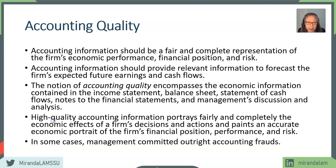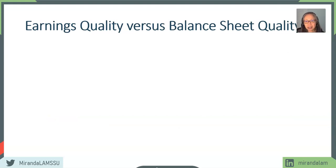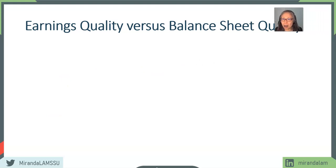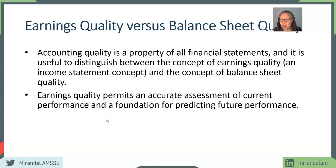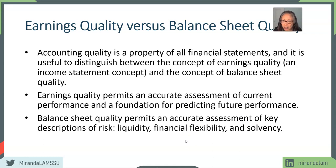The three main accounting statements are the income statement, the cash flow statement, and the balance sheet. When we talk about quality, we want to emphasize the quality of earnings as well as financial positions. Earnings quality is particularly important for valuation because it helps us understand and predict future performance and estimate value. Balance sheet quality is also important, particularly in terms of risk — we use it to estimate liquidity, solvency, and financial flexibility. Accounting fraud affects both earnings quality and balance sheet quality.